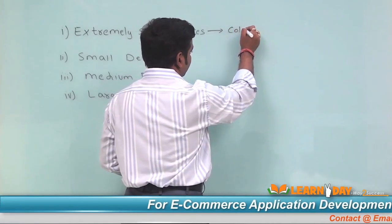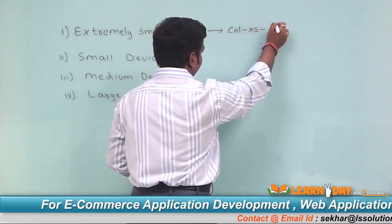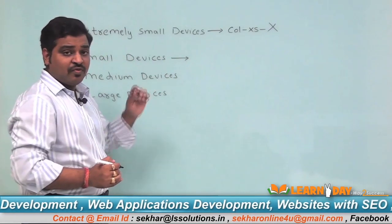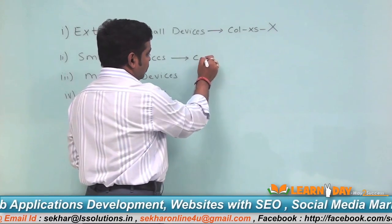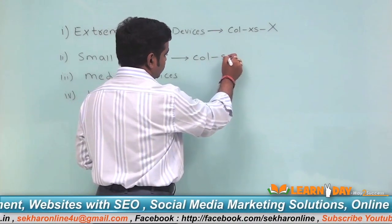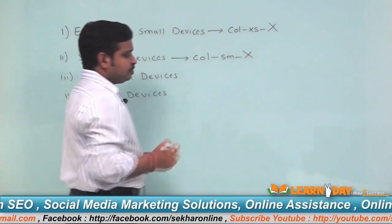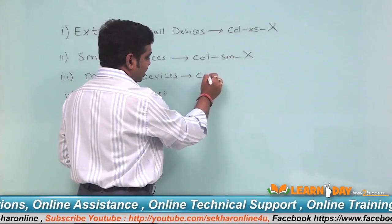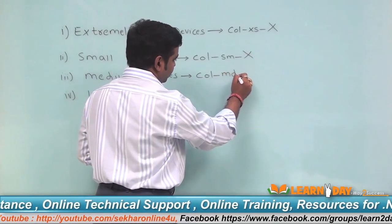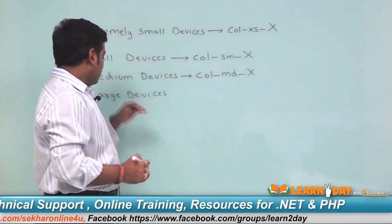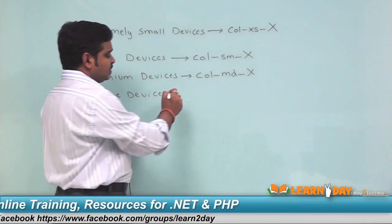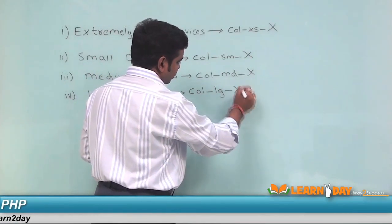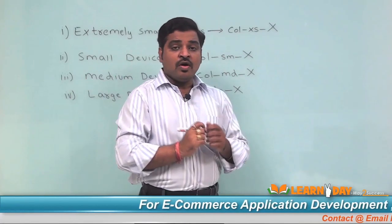To work with extremely small devices we use the class col-xs and a number. For small devices we use col-sm and a number. For medium devices we use col-md and a number, and for large devices we use col-lg and a number.